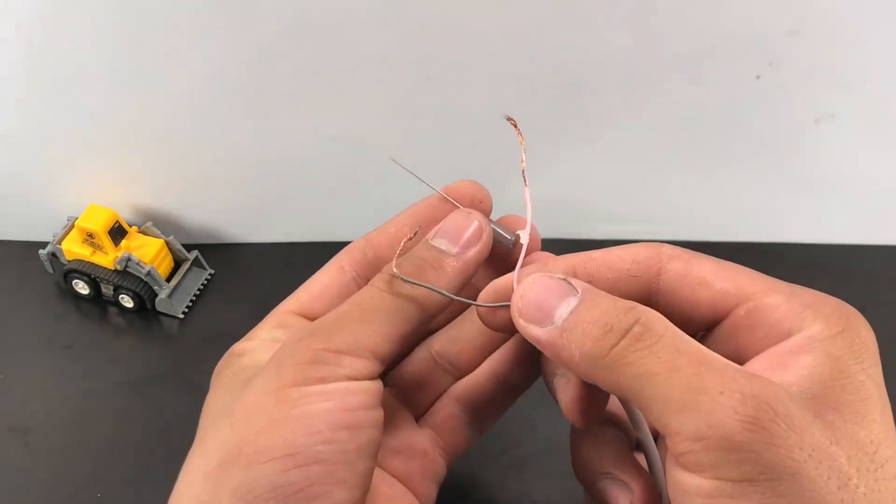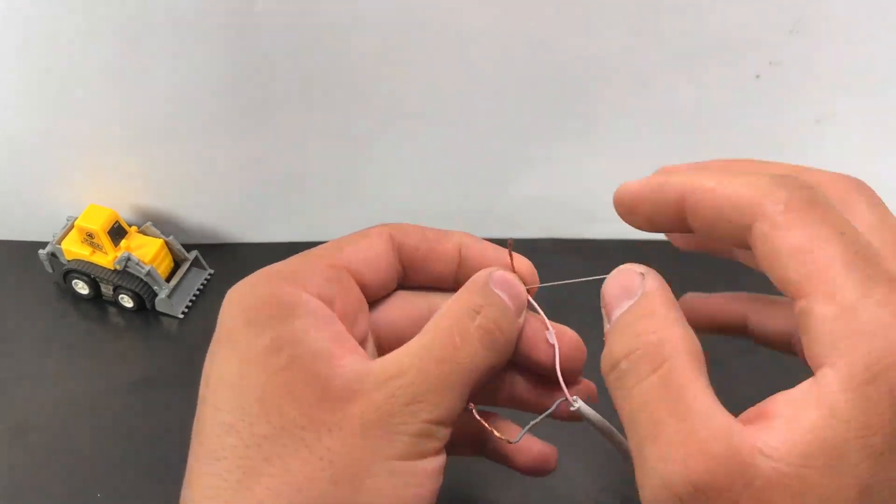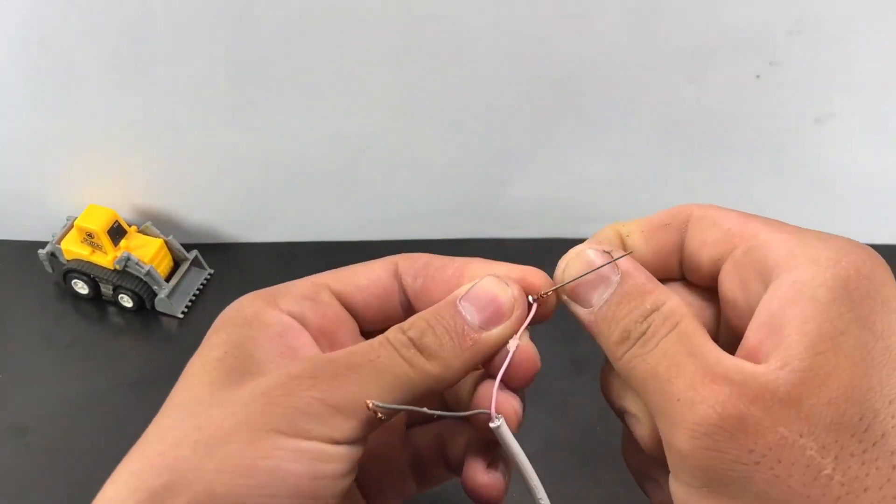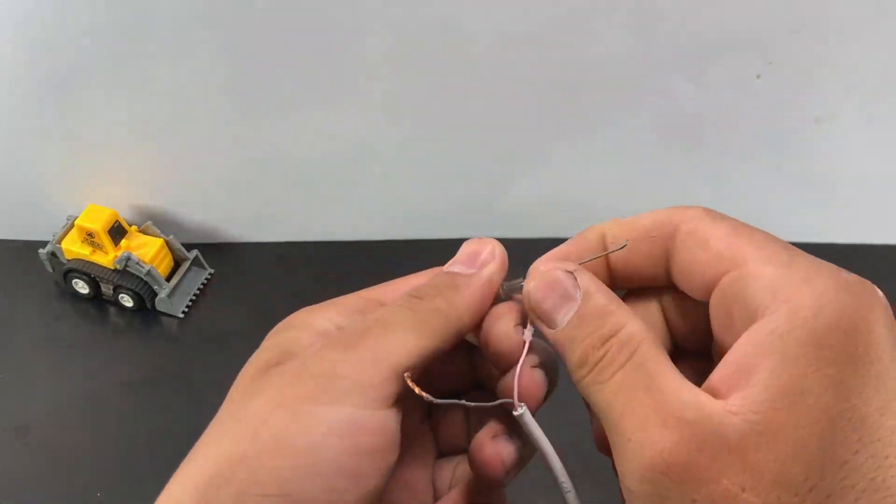Would you like to learn the easiest way to engrave on metals? Watch till the end. Connect the wire to the syringe needle according to the video.